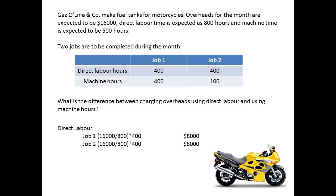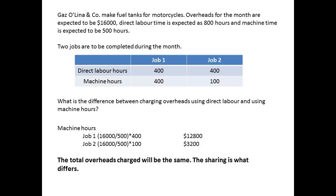First, we calculate indirect costs using direct labour. Each job requires 400 hours, so $16,000 divided by 800, then multiplied by 400, gives $8,000 for each job — we have allocated evenly. Now we shall allocate using machine hours. For job 1, we divide the $16,000 costs by the total machine hours of 500, then multiply by 400, to give an answer of $12,800. For job 2, the answer will be $3,200. The total overheads charged by either method will be $16,000. All that happens is that we share the cost differently using the two different methods.